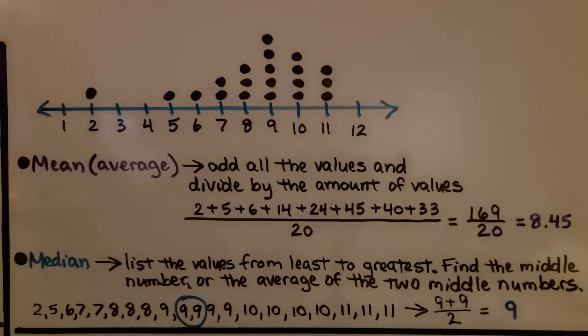For the median, we list the values from least to greatest and we find the middle number, or the average of the two middle numbers. There's 20 data values, so we've got two middle numbers. We add them together and divide by 2. We get 9 for our median.